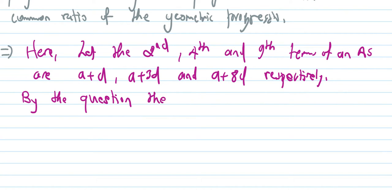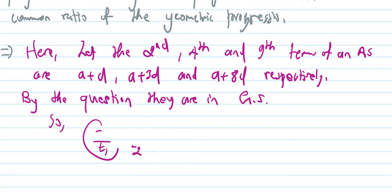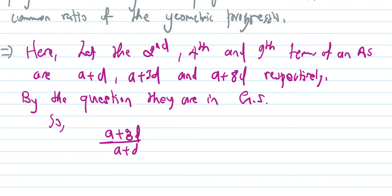Since these three terms are in Geometric Sequence, their ratios must be equal: (a + 3d) / (a + d) = (a + 8d) / (a + 3d).